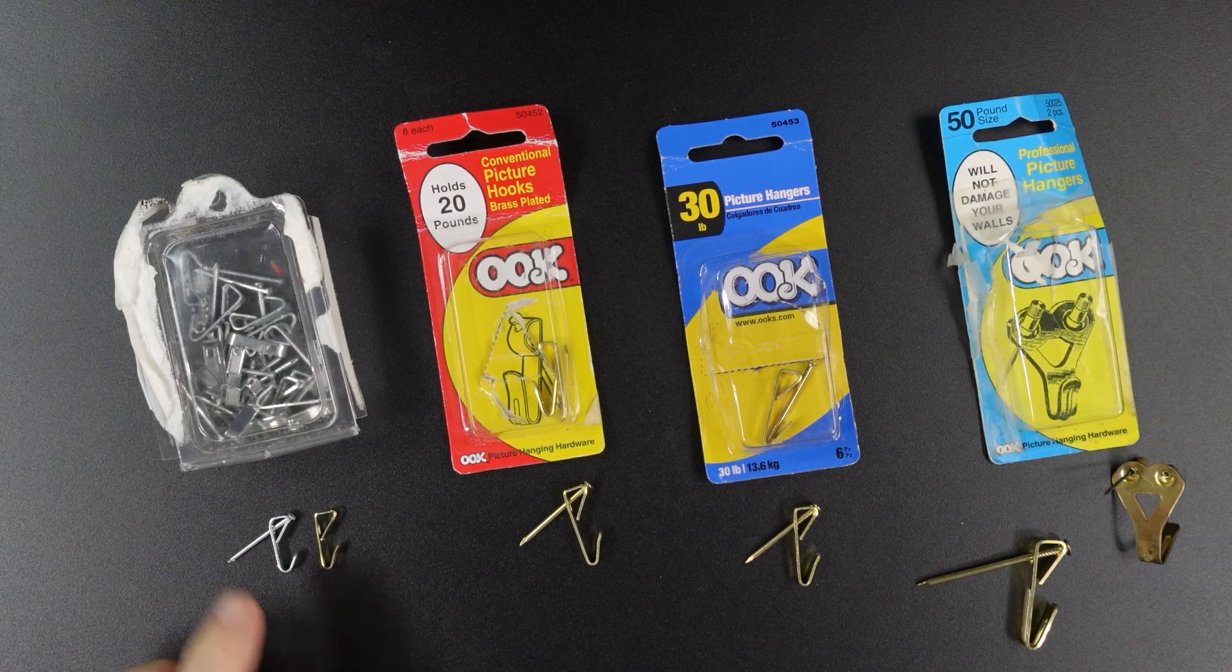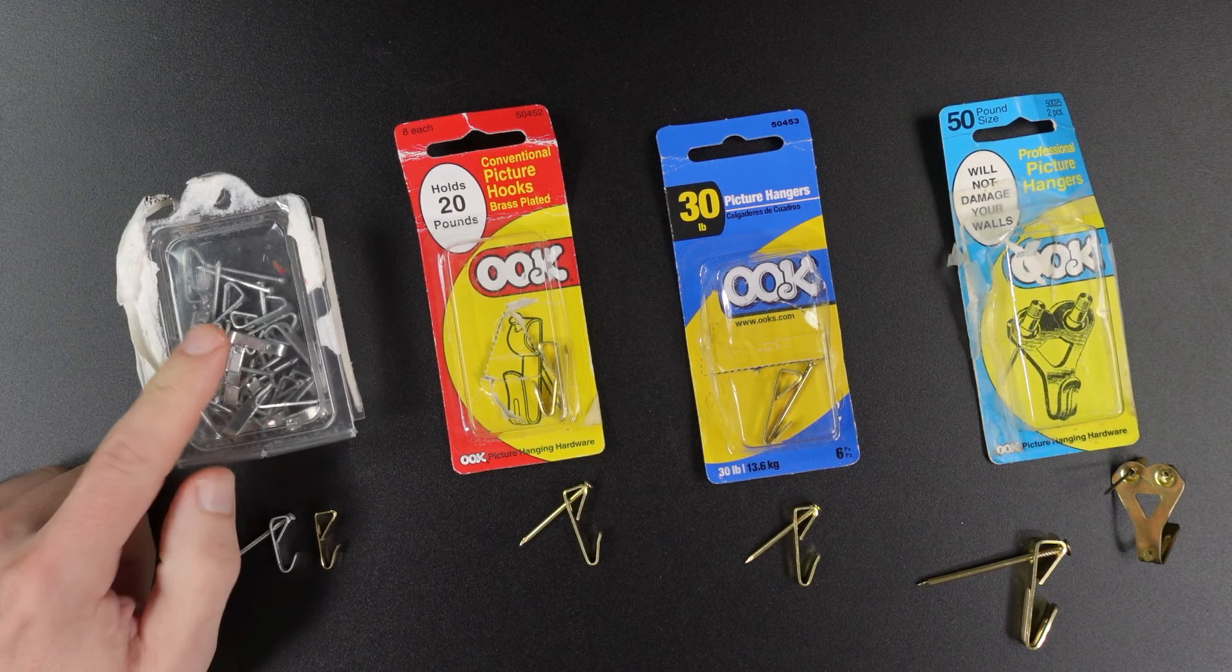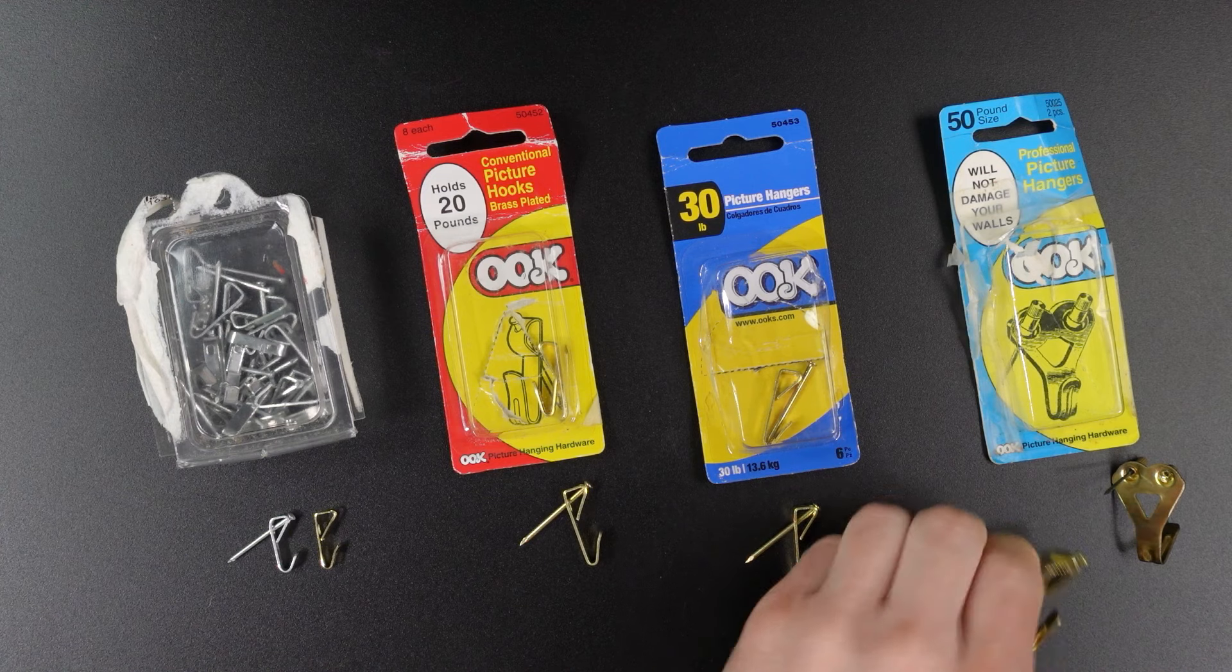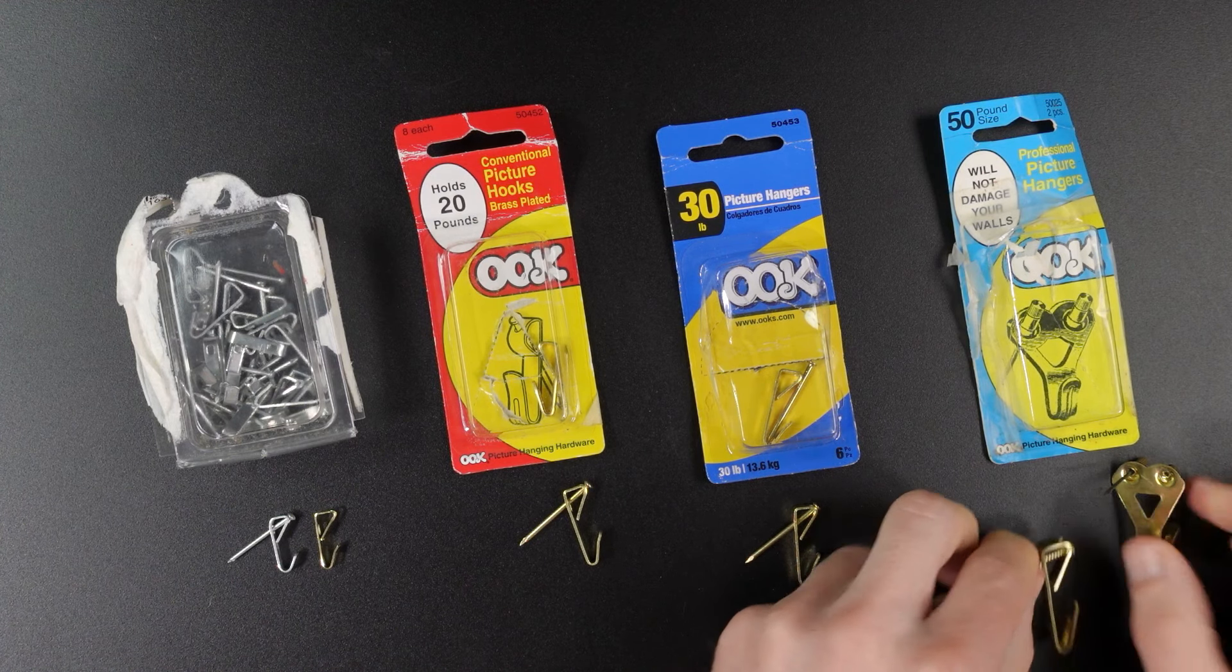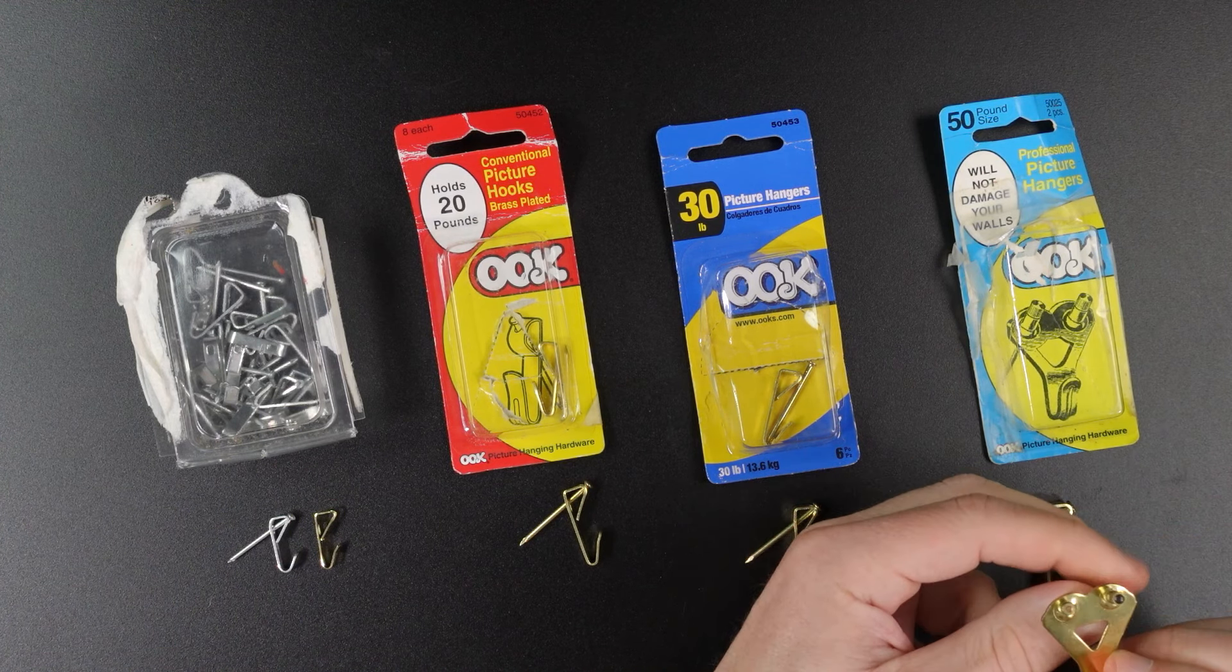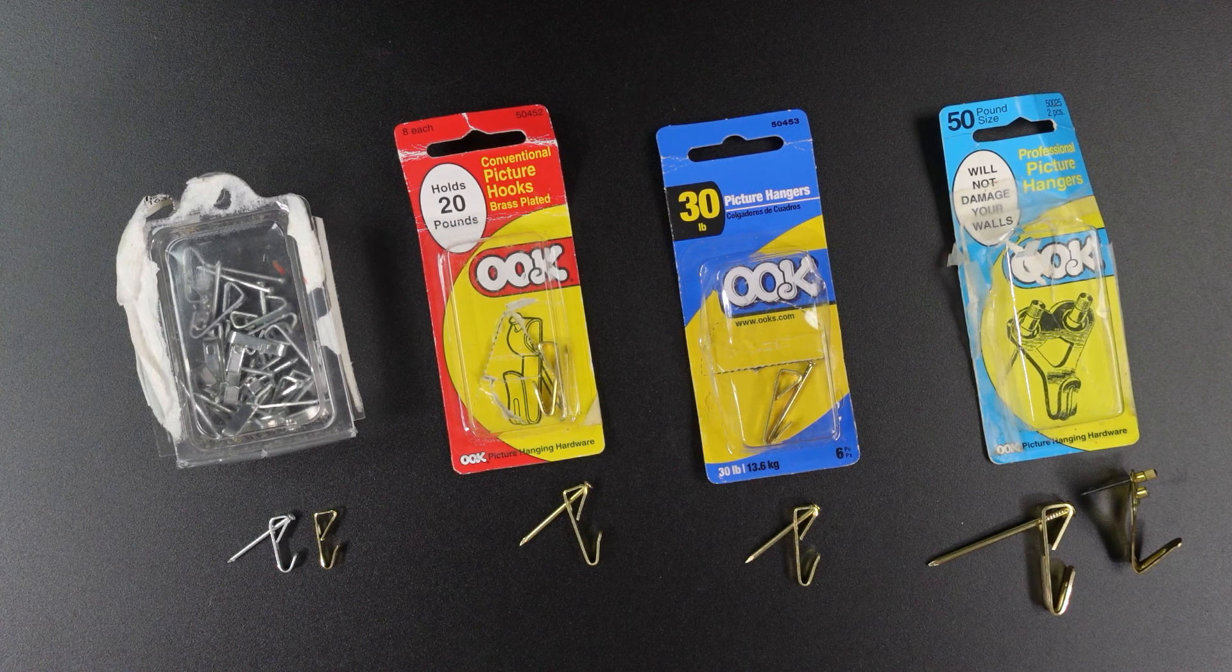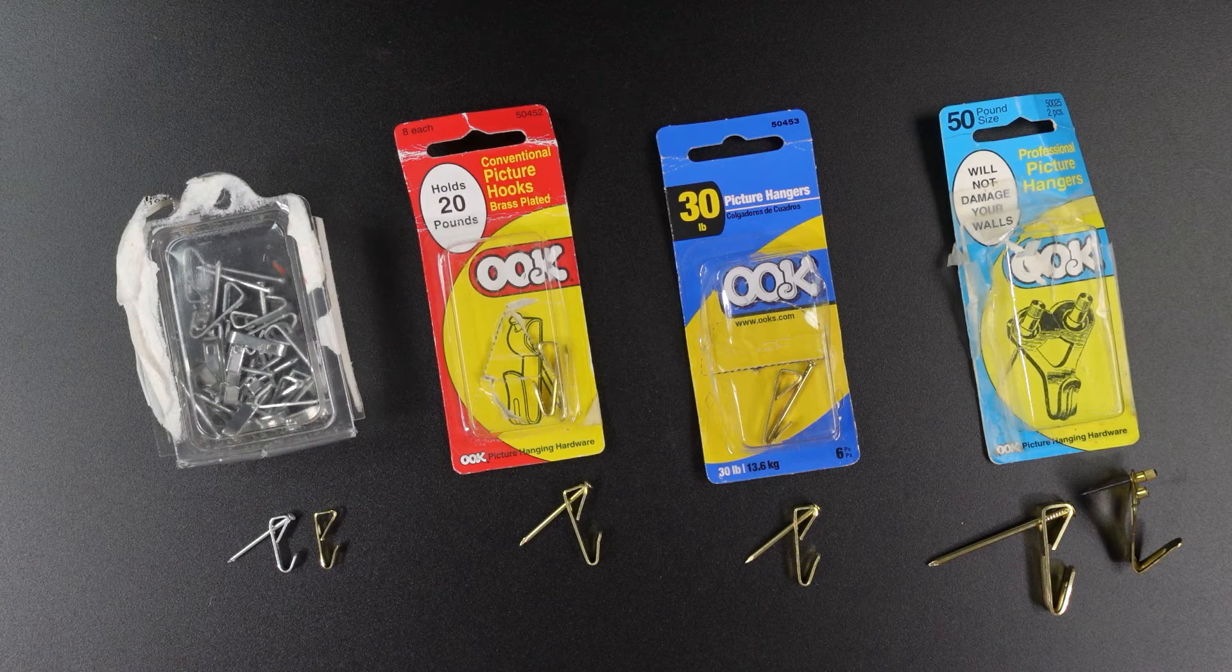They're rated for different weights. I forget what this is, it's probably 10 pounds. I got 20 pound ones, 30 and 50, and you can see they get much more substantial at the heavier end. And this one has two nails that go into the wall and the plate's wider. I'm missing the one nail, I gotta find where that went. So you definitely want to use the picture hanging hardware instead of just a nail.